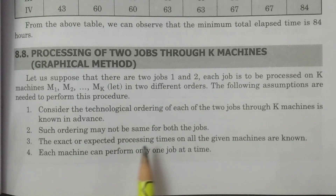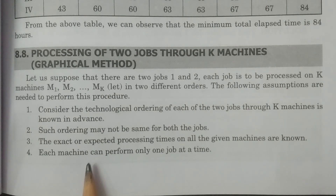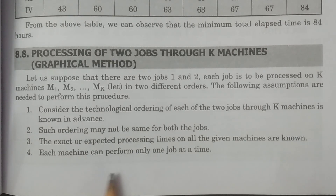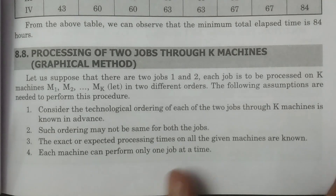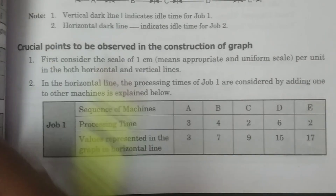Second, such ordering may not be the same for both jobs — the ordering need not be the same. Third, the exact or expected processing times on all the given machines are known. Fourth, each machine can perform only one job at a time. These are the four assumptions required to solve the problem using the graphical method.